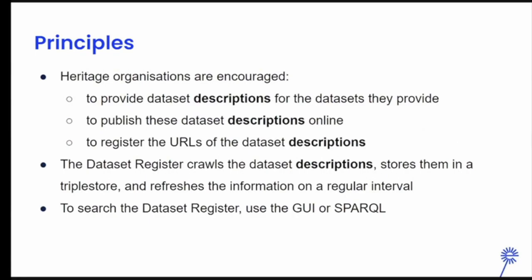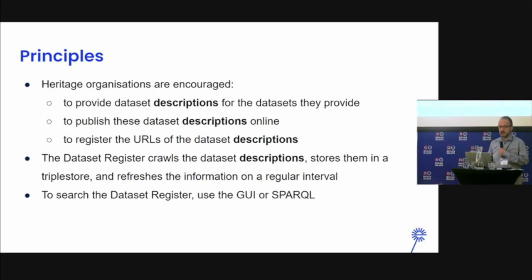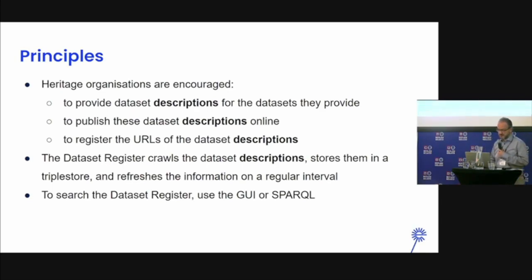The principles behind this dataset register: heritage organizations are encouraged to provide dataset descriptions of the data sets they supply. A dataset can be a data dump of their catalog, SPARQL endpoints — any data coming out of their systems that can be shared under a license, probably an open license to the community. We encourage them to publish these dataset descriptions. We'd like the data to be at the source, so organizations should publish their own dataset descriptions and register the URL with the dataset register so we can find them. The dataset register crawls these dataset descriptions, stores them in a triple store, and refreshes this information on a regular basis. At the end, we have a dataset register which can be searched via a website or, more machine-readably, via SPARQL queries.